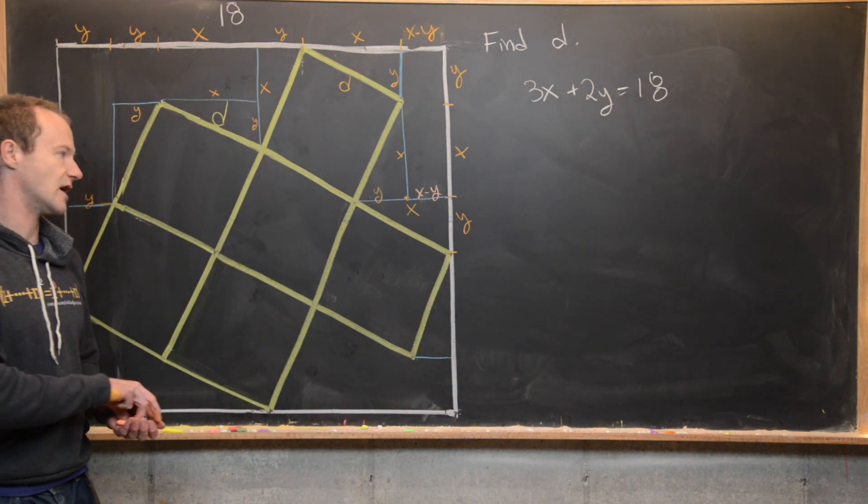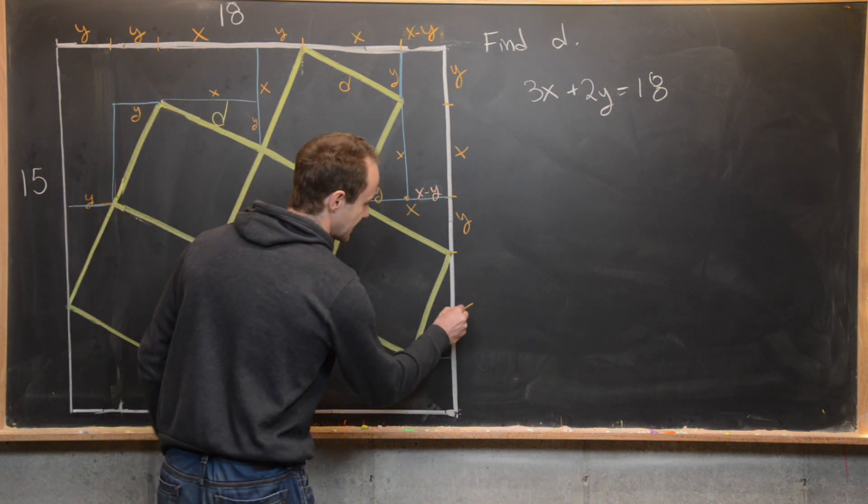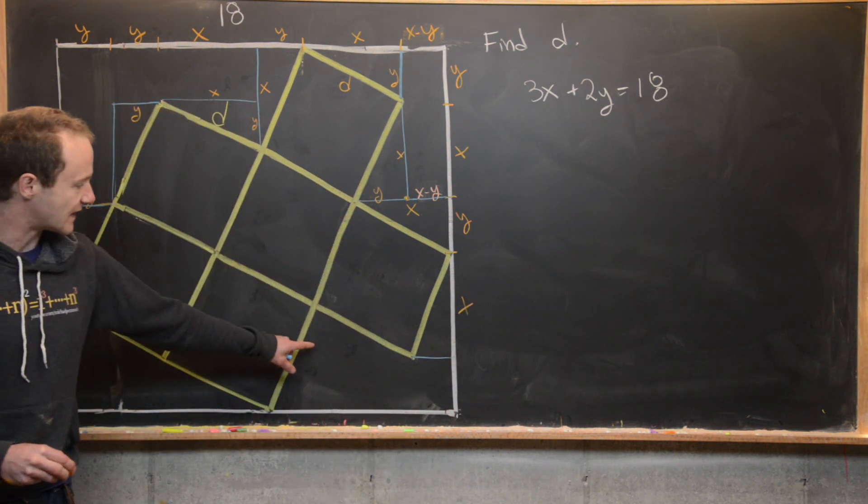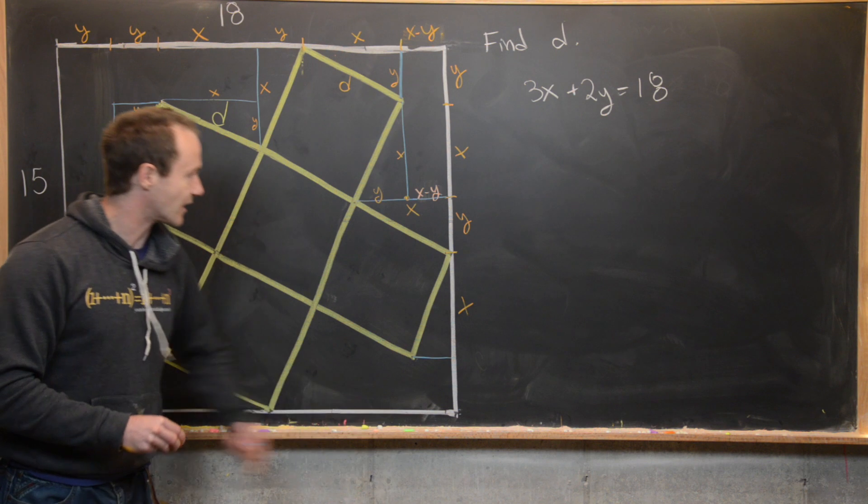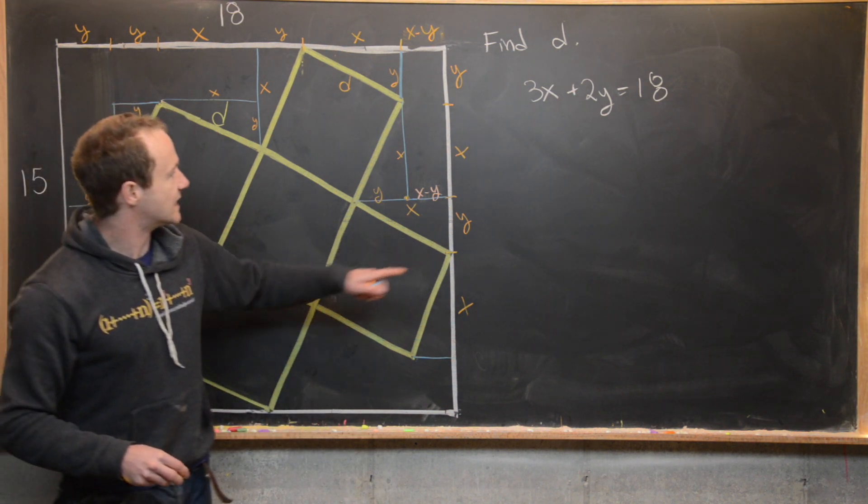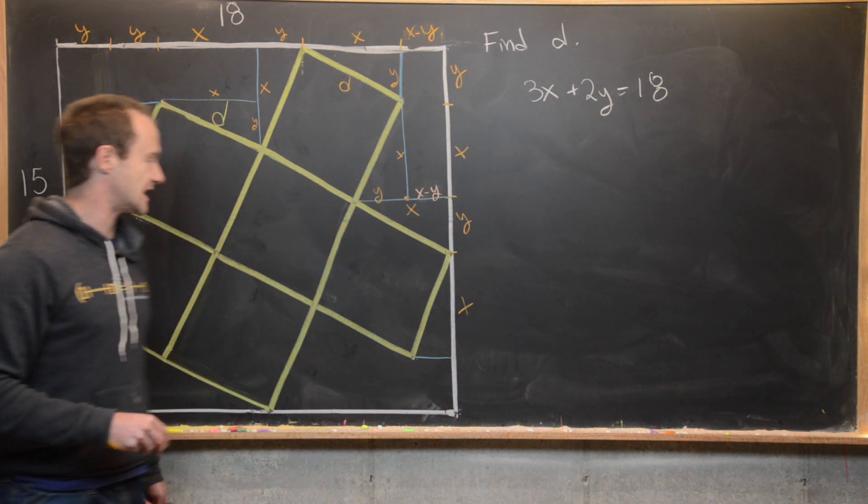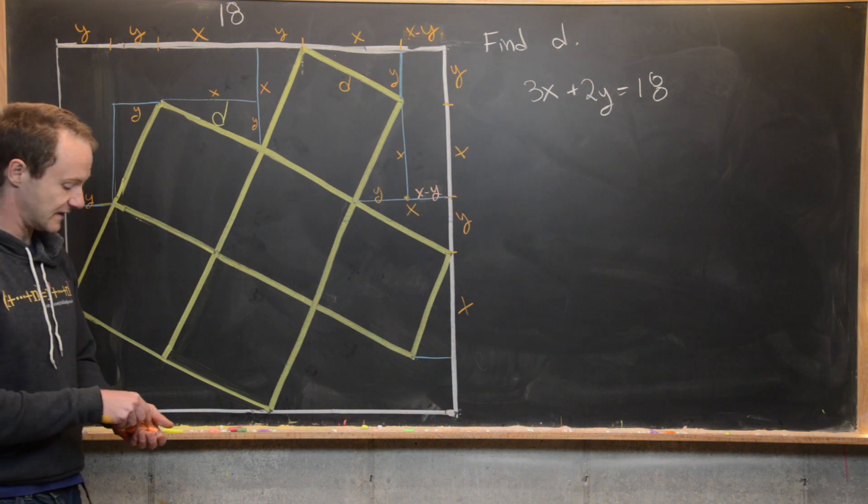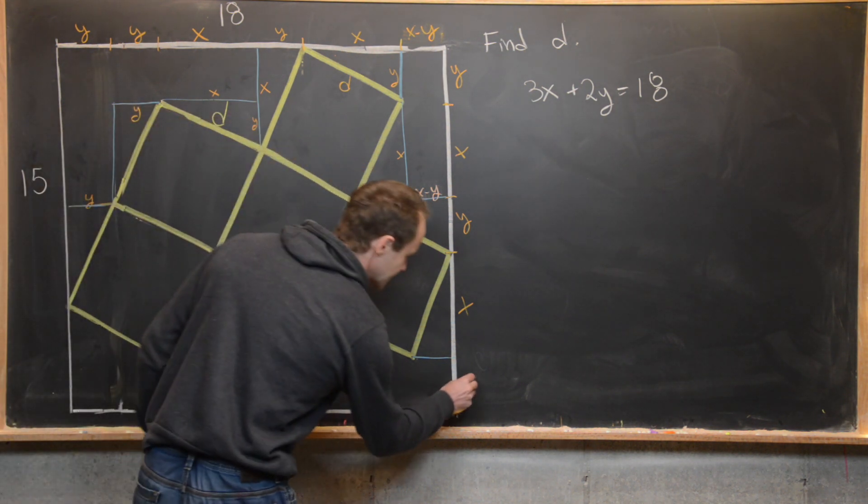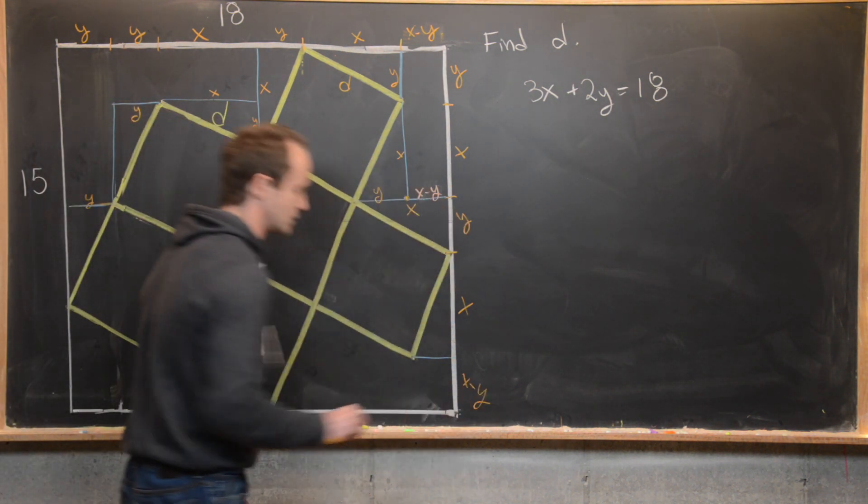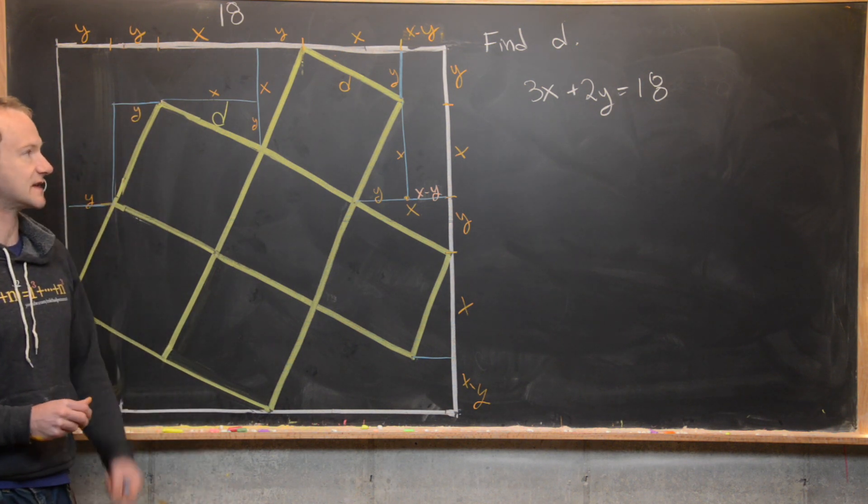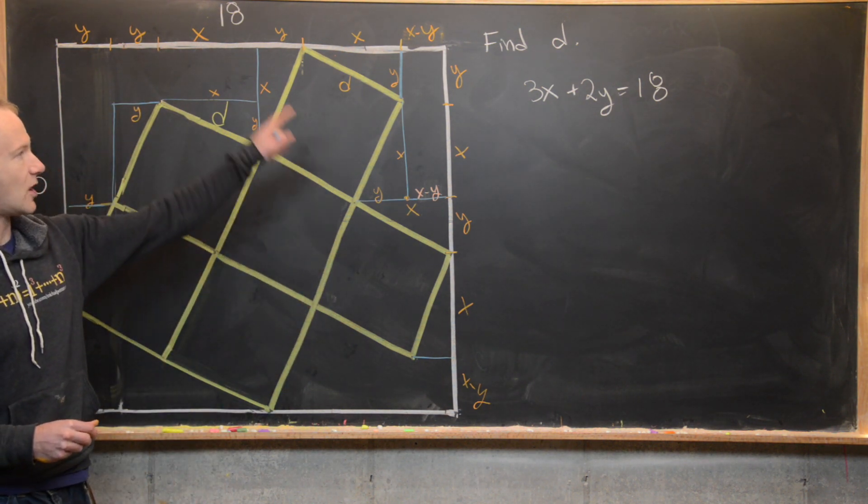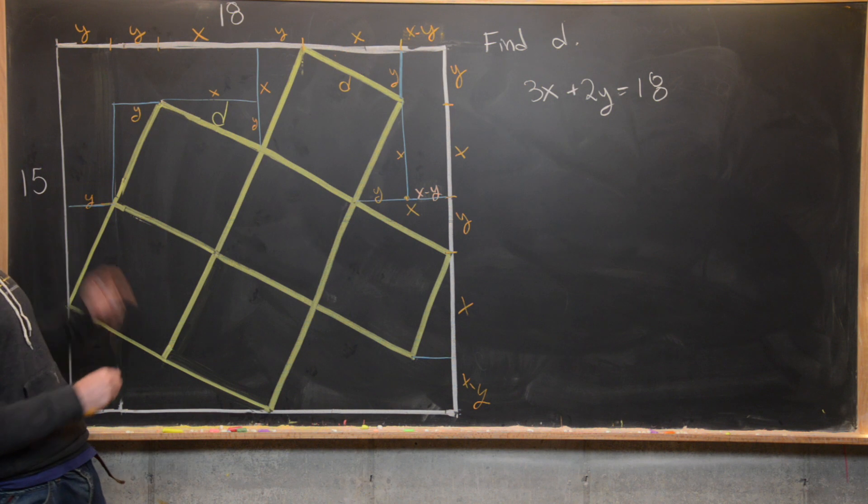We can create a triangle down here, which is similar to all of our other triangles. We know that this length is X. Now we can play the same game over here that we did for this line segment right here and we'll get the same quantity. So this is going to be X minus Y. Again, doing exactly the same thing.